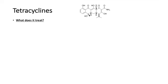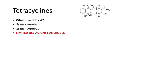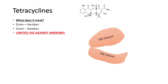So what do tetracyclines actually treat? Tetracyclines are actually very effective against gram-positive and gram-negative aerobes, and they actually have very limited use against anaerobes. Another way to remember this is to think about the ribosome as a mouth and you are actually breathing in oxygen — that's a silly way to remember, but it helps you recall that tetracyclines are good against aerobes but not good against anaerobes.